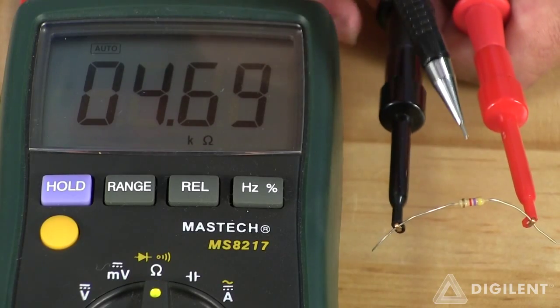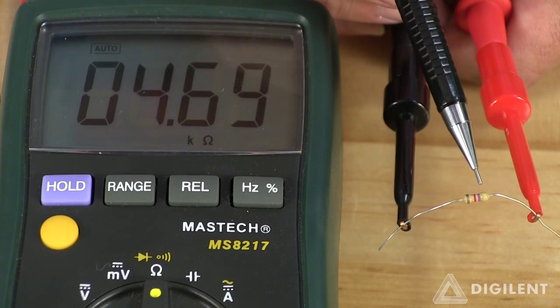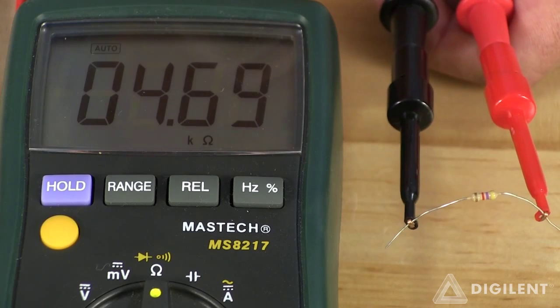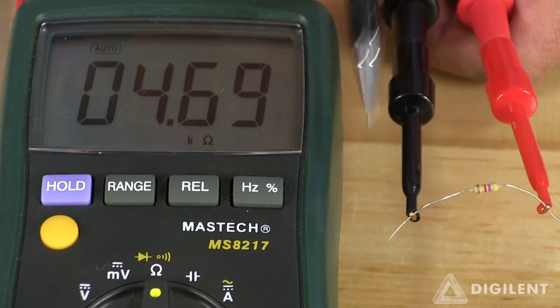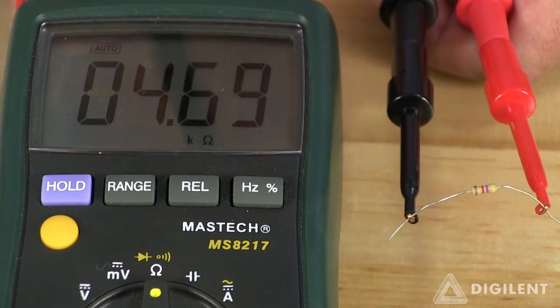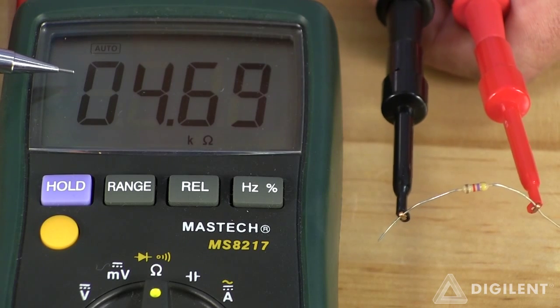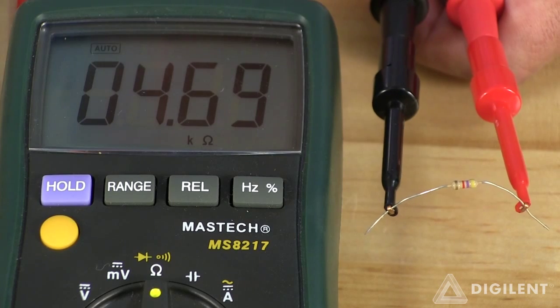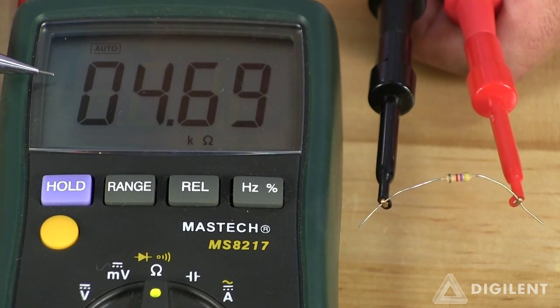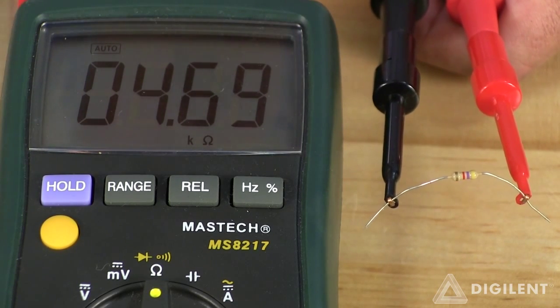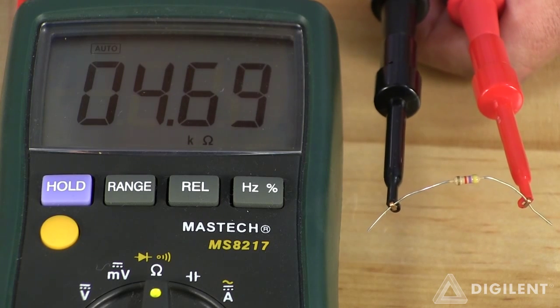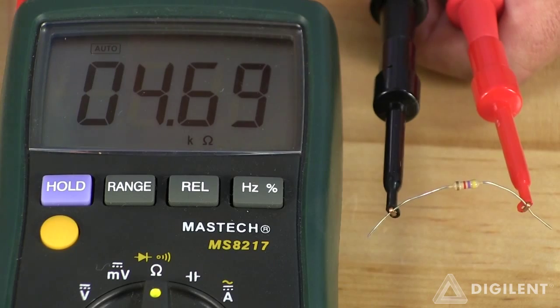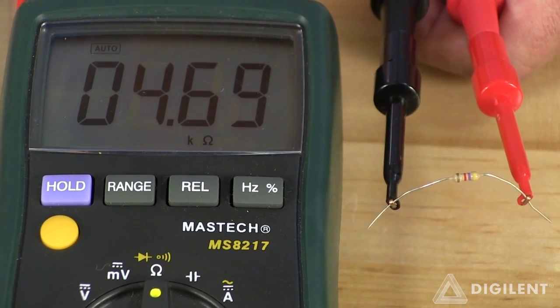Our resistor color codes are yellow, violet, red. That corresponds to a nominal 4.7 kilo ohm resistor. When we use our DMM to measure the resistance of the resistor, we get 4.69 kilo ohms. Extremely close to the nominal value. Now both our nominal and our measured value with the DMM are slightly lower than what we got with our voltage current data. That's possibly because I was kind of careless about using the actual measured voltage values when I made my calculations.